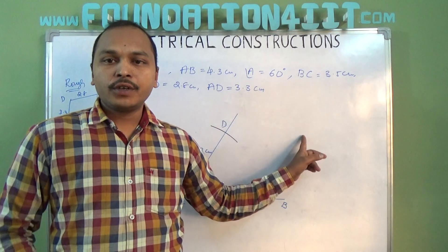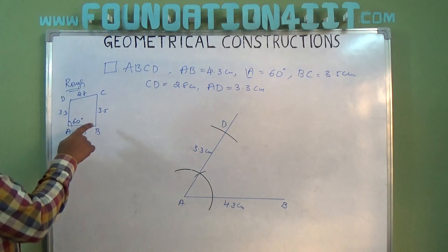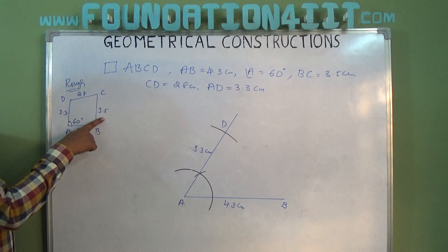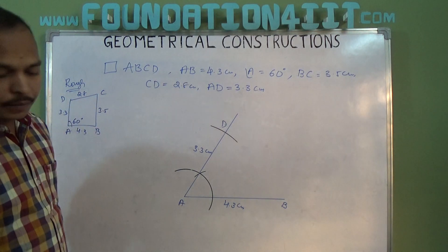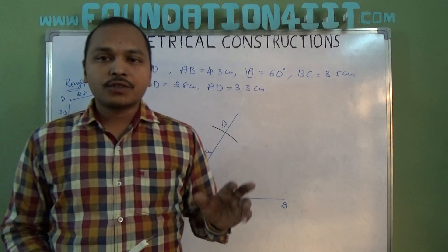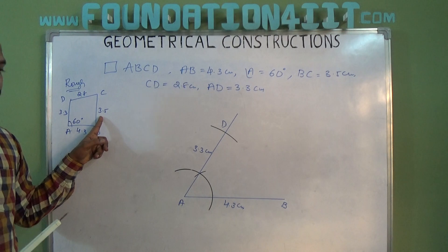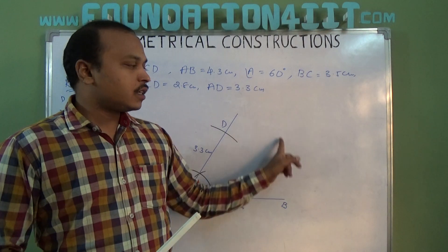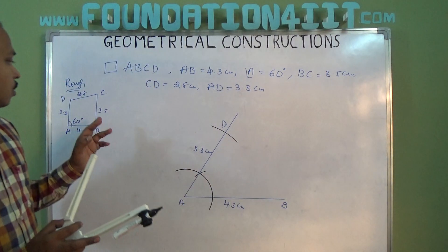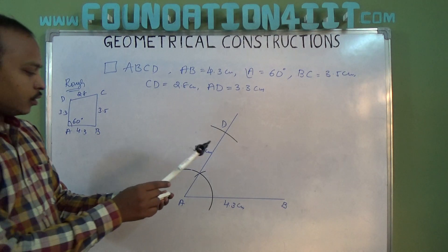But to find C, we need B to C distance and D to C distance, which we know. B to C is 3.5 centimeters and D to C is 2.8 centimeters. So two arcs we should draw from B and D.